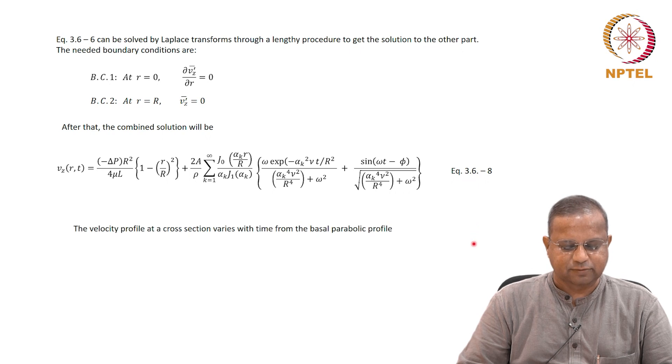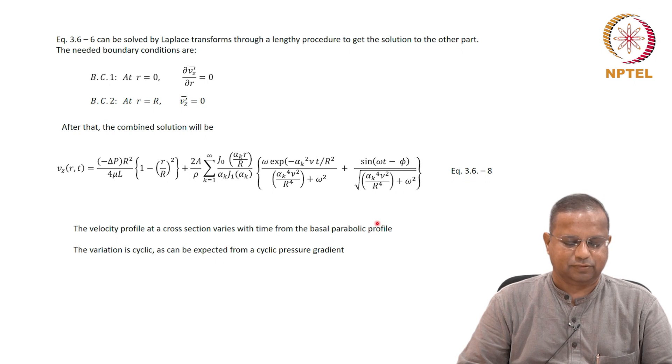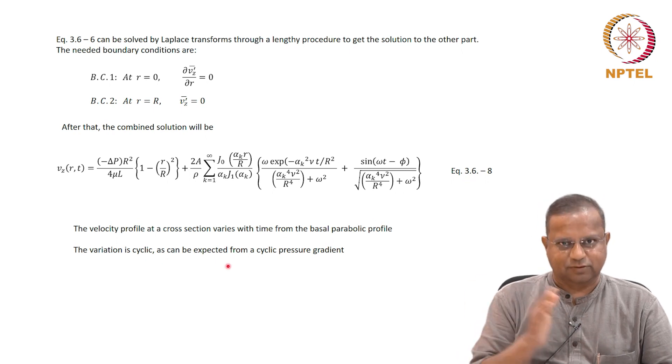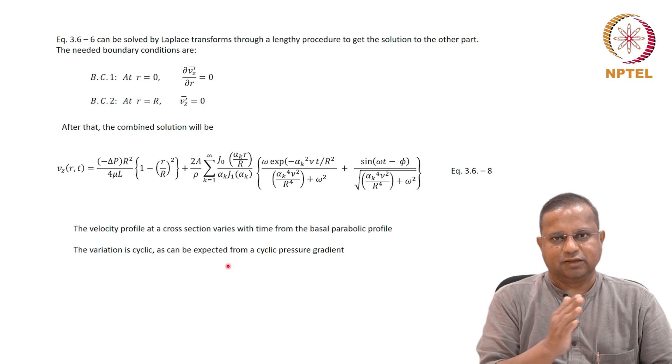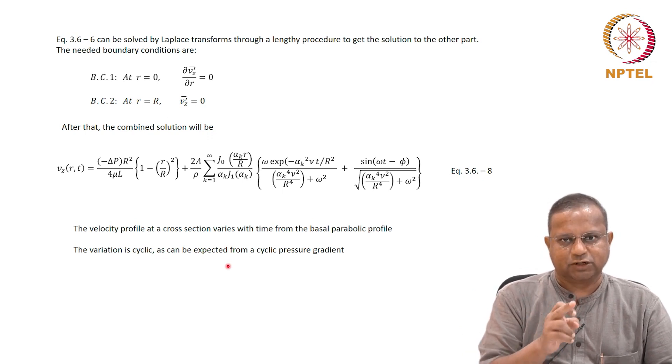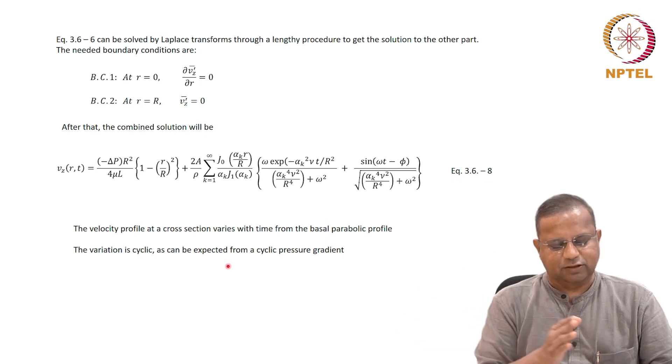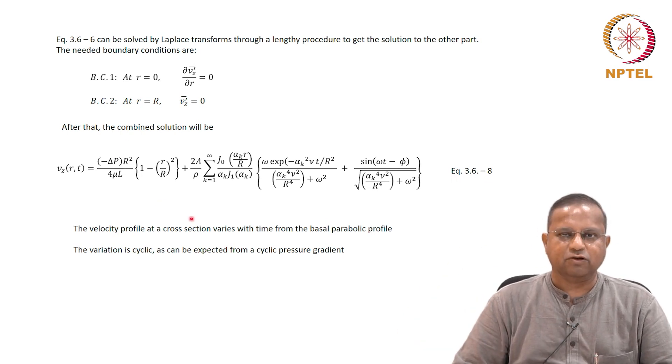How the velocity profile varies from the basal parabolic profile is what I would like you to find out. The variation is cyclic as you would expect, because the pressure drop variation is a sine wave, and therefore the velocity will also be cyclic.